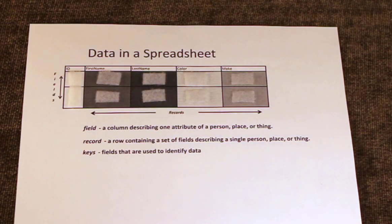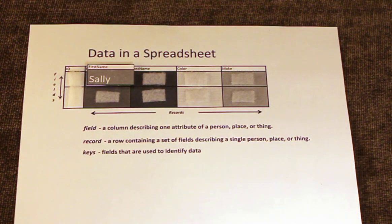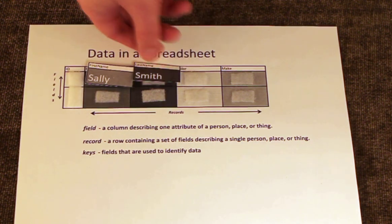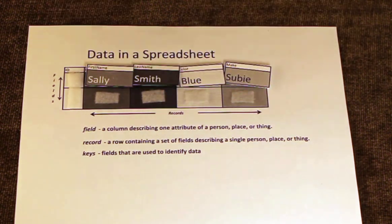Our database might start out really simple, like this spreadsheet showing cars and their owners. A field describes a single attribute of an object. A record is a set of fields that describes a single person per object.